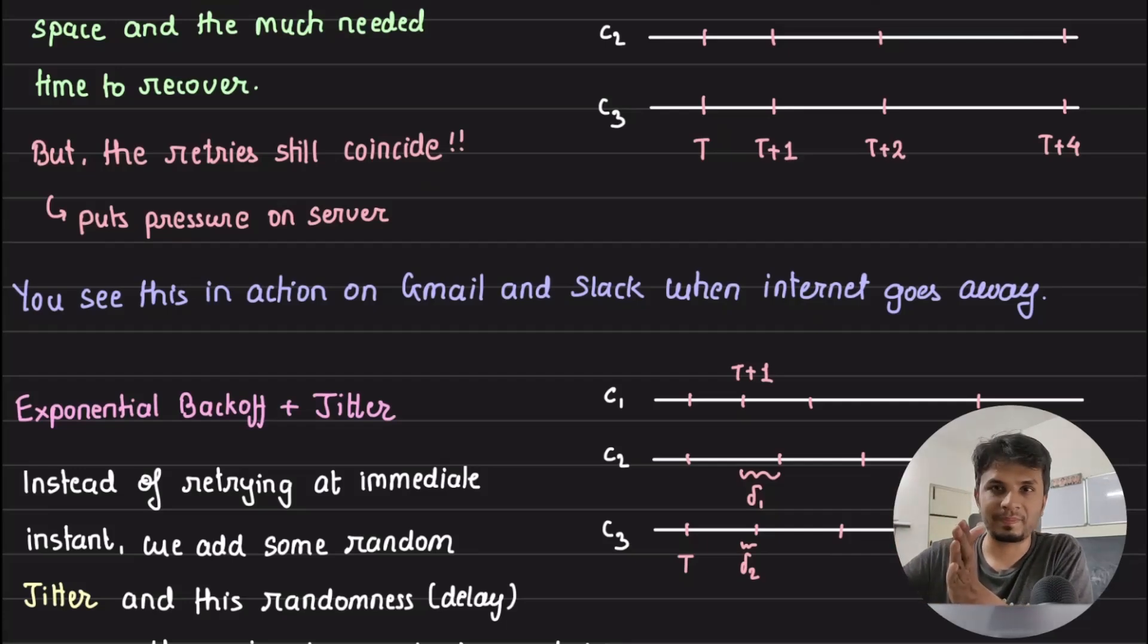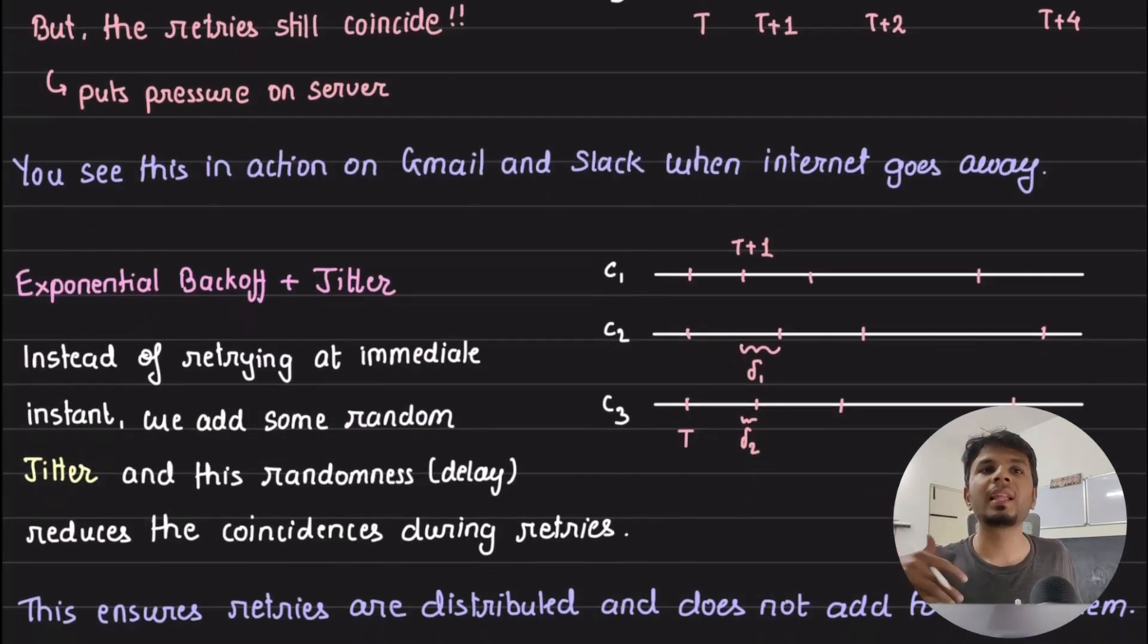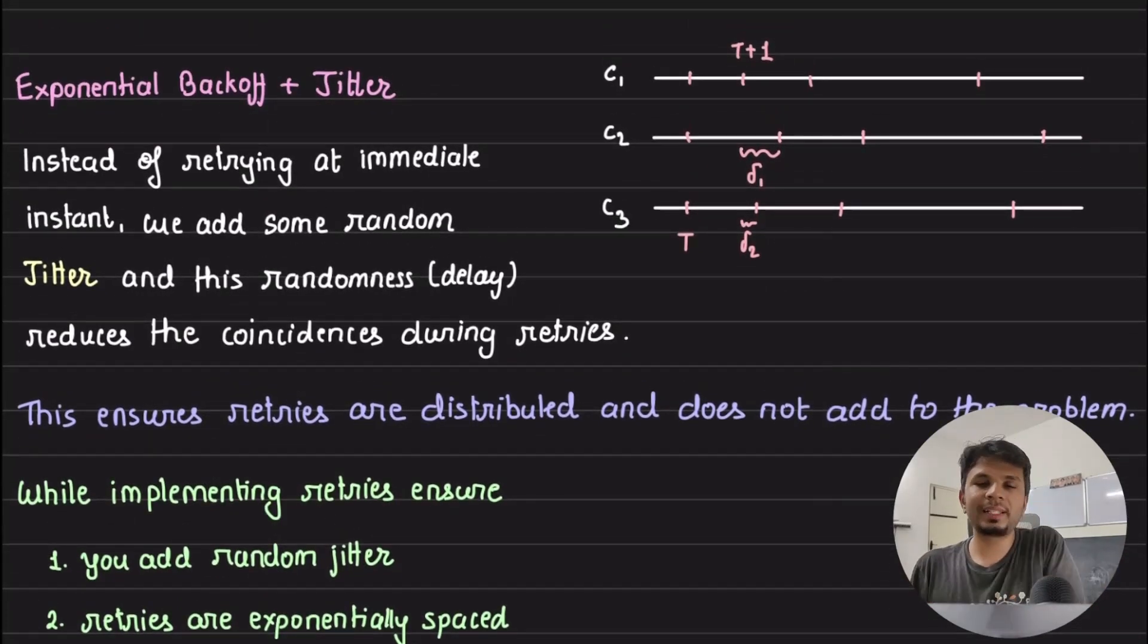This has a problem because a lot of clients who saw the error at nearly the same time have retries that coincide, giving or putting huge pressure on the server at spaced times. So how do we solve it? The better way to do this—exponential backoff we all agree is a good approach, but the problem is with retries coinciding. The solution to that is we add some randomness, some jitter, a random jitter. So instead of retrying at 1, 2, 4, 8, 16, we add some jitter. This is a random value chosen in some range, and you wait for that time before you retry. The jitter that you add ensures that there are fewer coincidences happening around retries, and this would almost space out the retries that you are making on the server, giving the server enough time to recover so there is not a huge spike of requests coming in because of retries. This breathing space would allow your server to recover.